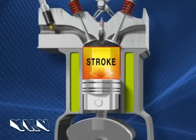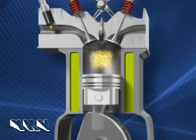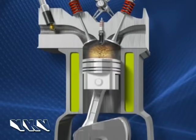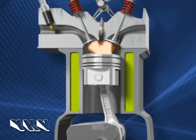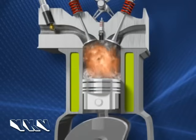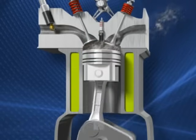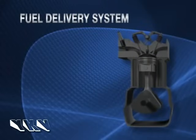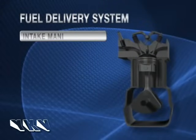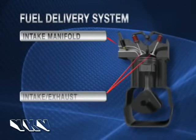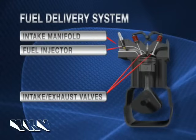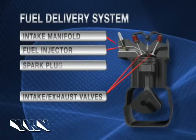The longer the stroke of the piston, the larger the displacement of gas and air that occurs in the cylinder. To propel that piston, we need to ignite a tiny bit of gas and a whole lot of air. This creates expansion inside the cylinder. The fuel delivery system consists of an air intake manifold, valves — intake and exhaust — a fuel injector, and a spark plug.